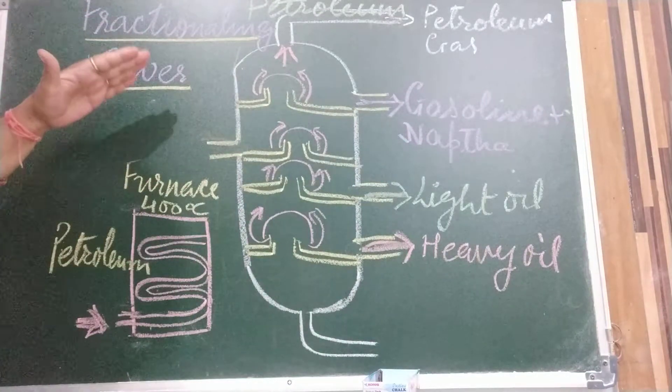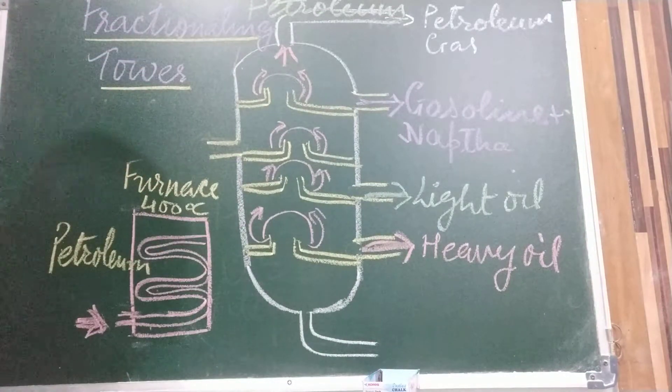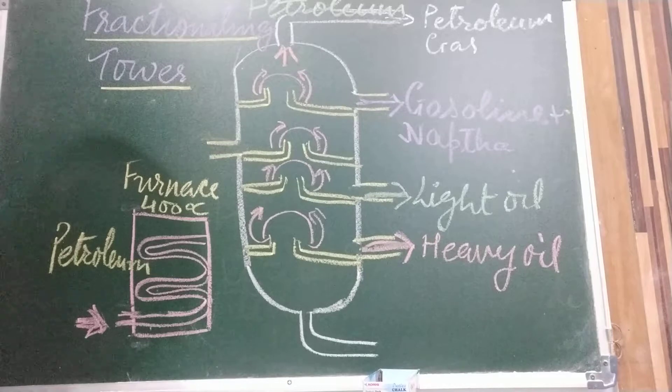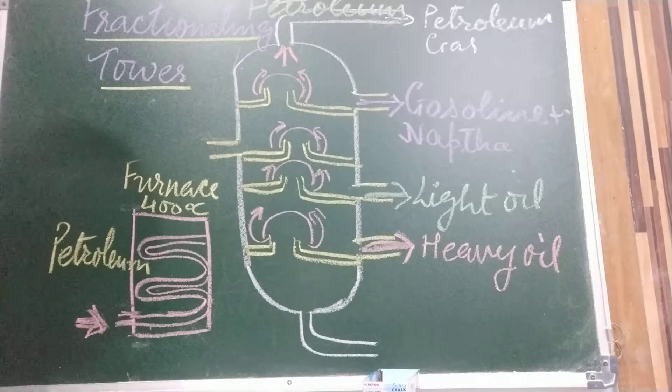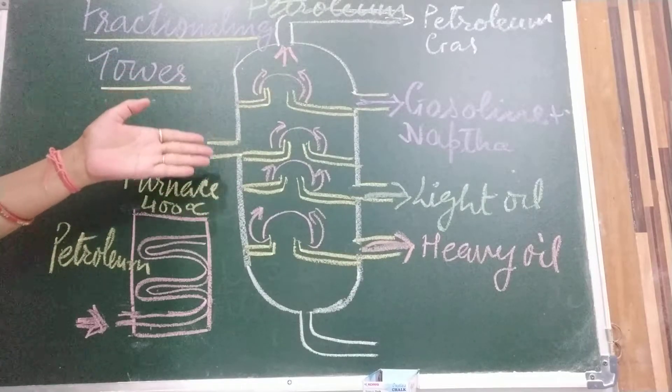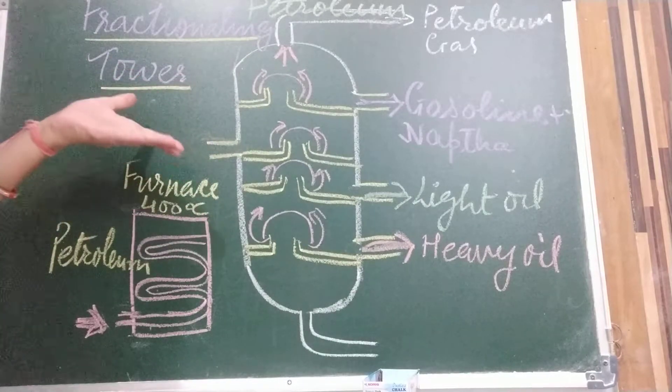As we know, there are number of hydrocarbons. So again I am repeating, as the number of carbon atoms in hydrocarbon increases, its boiling point also increases. This property is used to separate the different components of petroleum by fractional distillation method.